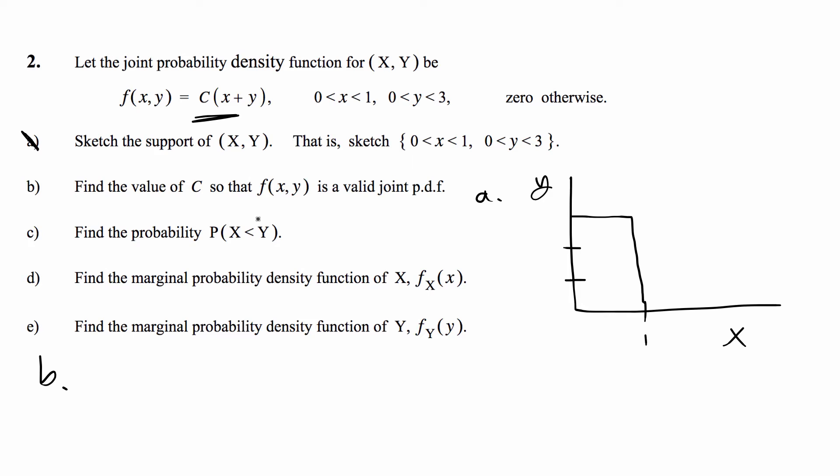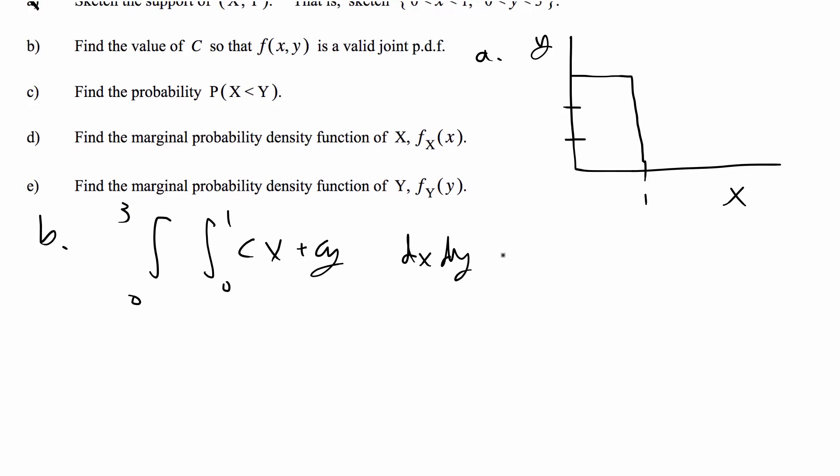B says find C so that f(x,y) is a valid joint PDF. For questions like this, the integral over the whole support of the joint probability density function has to equal 1. In this case, we're just going to plug in that for 0 to 1, dx, dy, and 0 to 3. We have C(x + y) and we're going to solve that equal to 1 and solve for C.